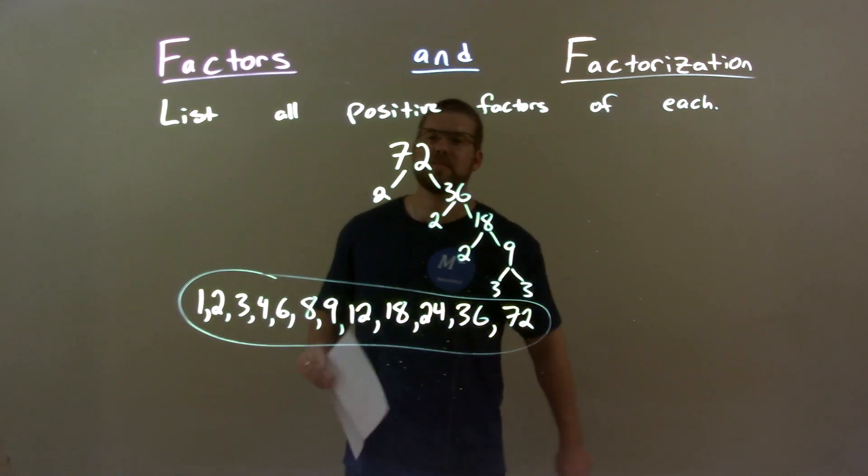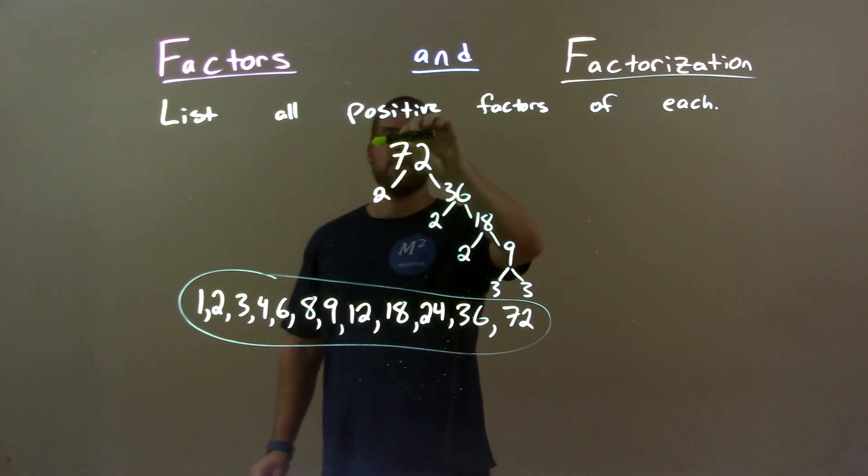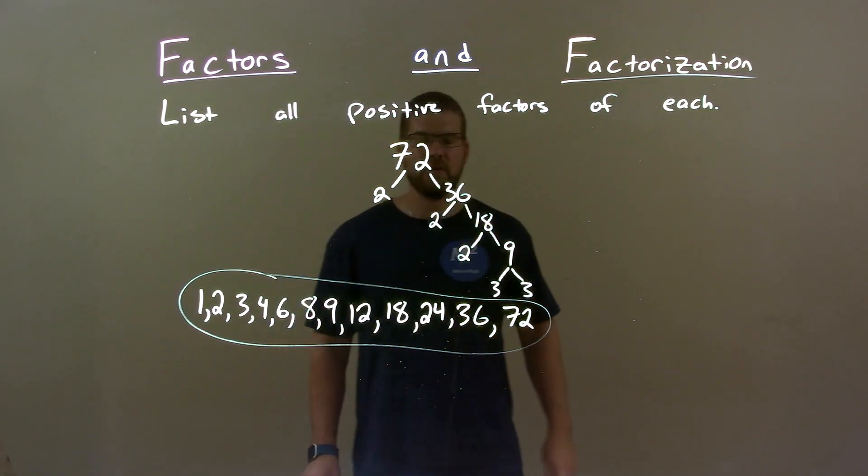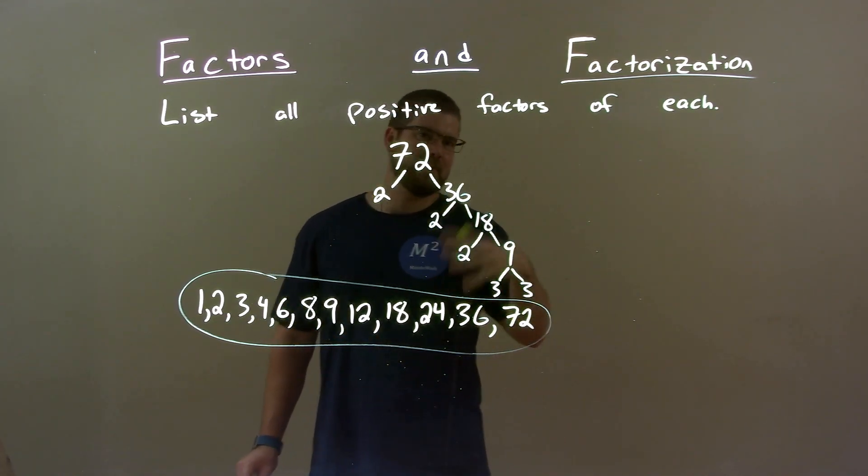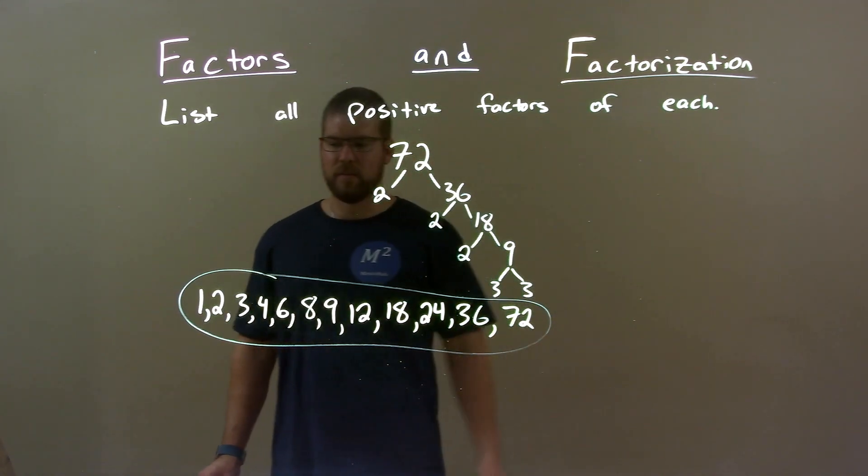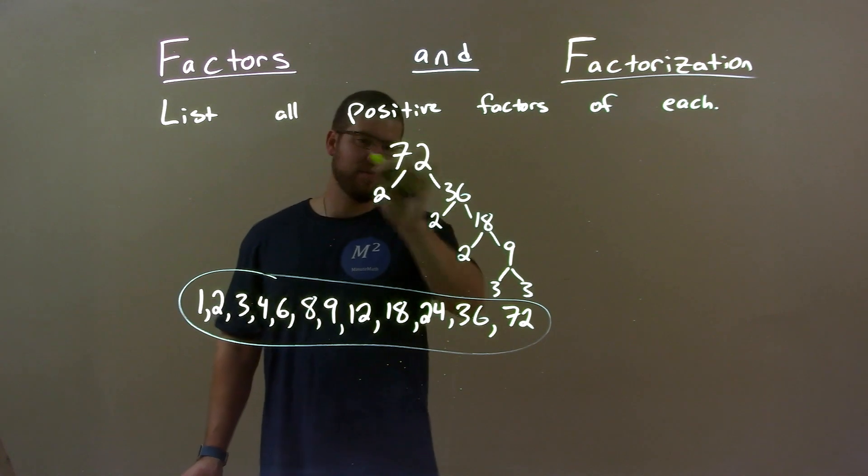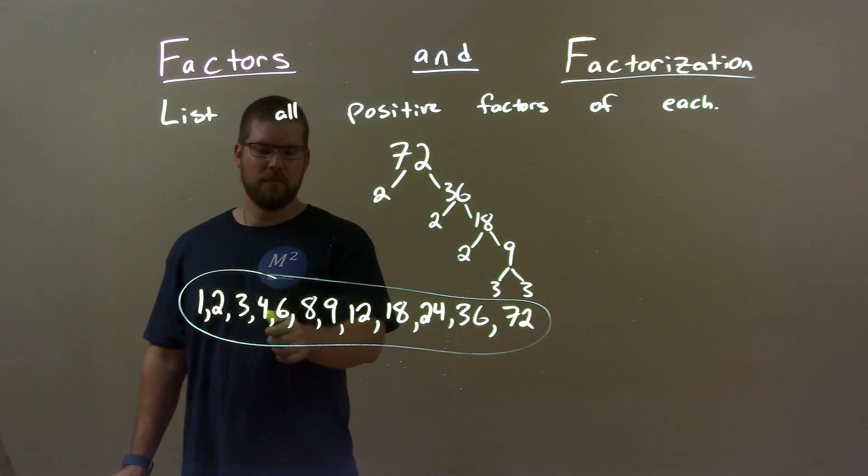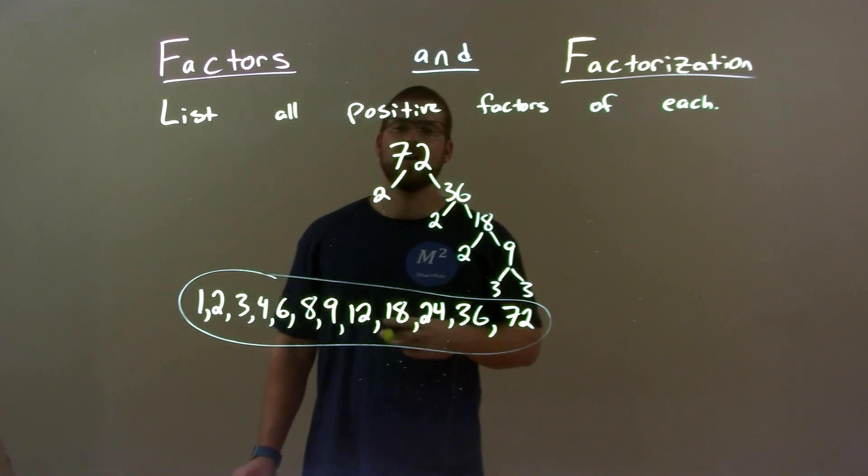So quick recap. We're given 72 and we'll find all the positive factors of it. Well, I did my prime factorization of 72 and found all the numbers that multiply here giving me positive numbers with the prime numbers. That came out to be, besides 1 and 72 because those will always be there, 1, 2, 3, 4, 6, 8, 9, 12, 18, 24, 36, and 72.